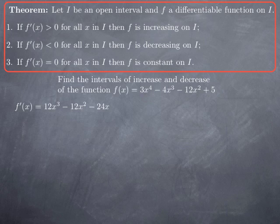What we want to know about f' is its sign — in other words, for what values of x it's positive, and for what values it's negative. Therefore, we're going to factor f'. This is an important point: when you're looking for the sign of a function, you want to have it in factored form, because then if you determine the sign of each factor, you can conclude about the sign of the product.